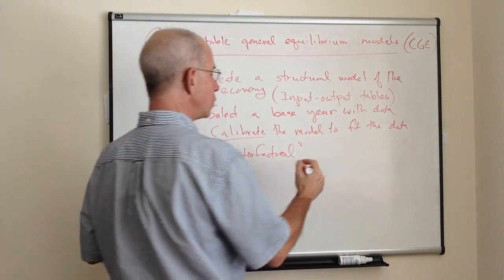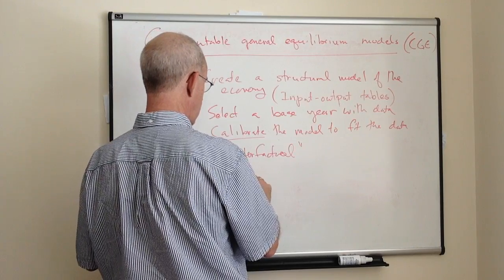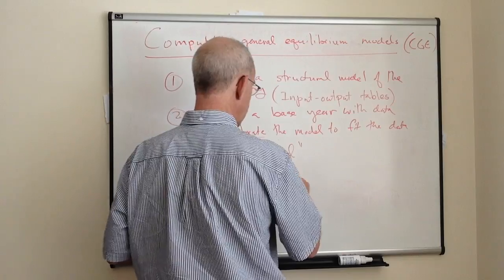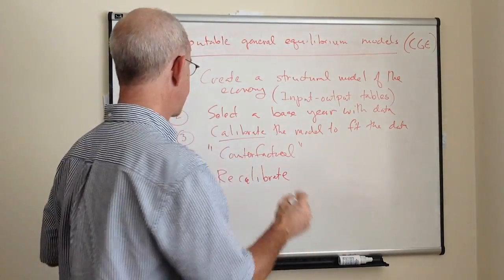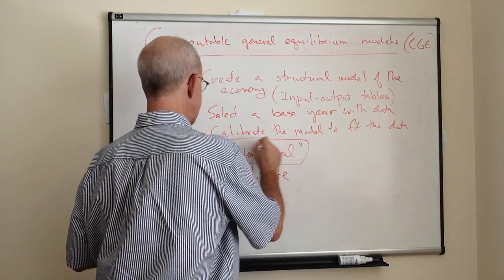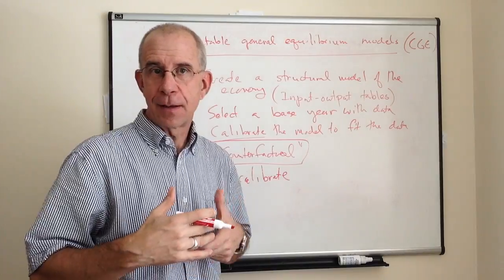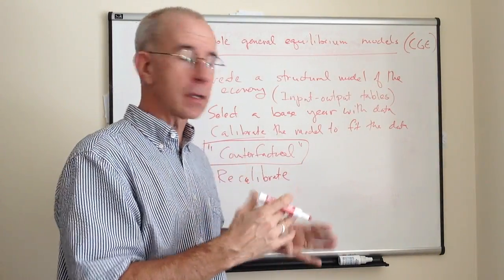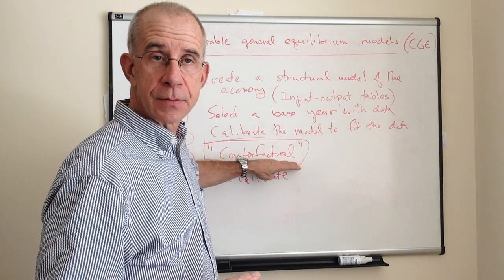And then you recalibrate, if you will. You look at what this base year would have looked like if this counterfactual policy had been in place. So it's really kind of a made-up world, a parallel universe, what the economy would have looked like if this alternative policy were in place.